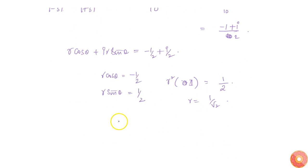So if we take 1/√2 outside we get from this cosθ is equal to -1/√2 and sinθ is equal to 1/√2. Which makes θ is equal to 3π/4.